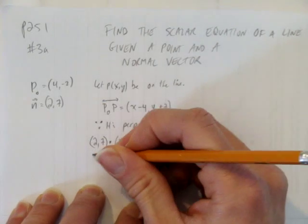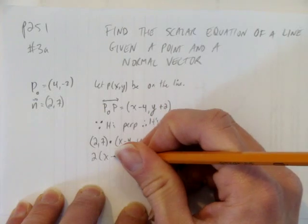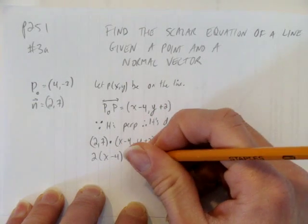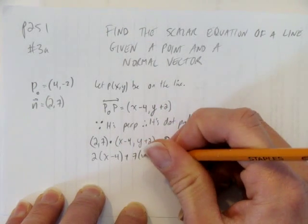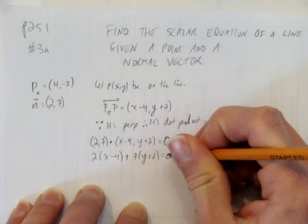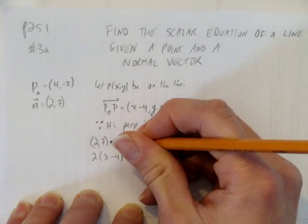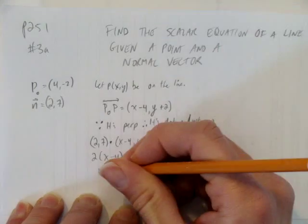And now we just apply dot product. This is 2 times (x - 4) plus 7 times (y + 2) equals 0. That's just from the definition of dot product.